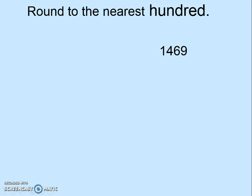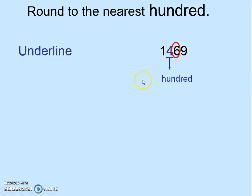One final example. Round to the nearest 100. Underline the digit in the hundreds place. Circle the number to the right. 6 is more than 5, so we plus 1 to the number in the hundreds place, and then replace with zeros. The final answer is 1,500. Thank you.